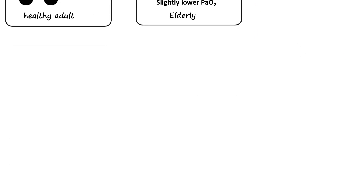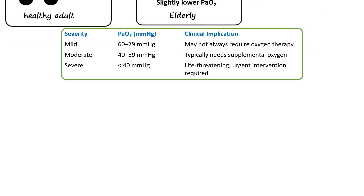Abnormally low oxygen levels in arterial blood are used to categorize hypoxemia as mild, moderate, and severe. Mild hypoxemia is defined as a PaO2 between 60 and 79 mmHg. Moderate hypoxemia corresponds to a PaO2 between 40 and 59 mmHg, which typically necessitates the administration of supplemental oxygen. Severe hypoxemia is identified when the PaO2 is less than 40 mmHg and is considered life-threatening, requiring urgent medical intervention.